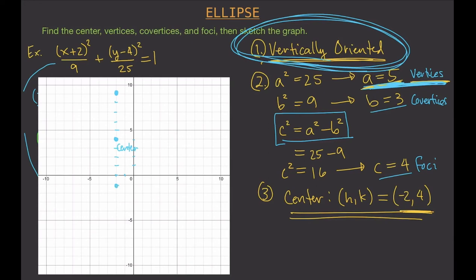The co-vertices are 3 units away from the center. Since vertices are already plotted up and down, we count 3 units left and 3 units right. Those are our co-vertices.